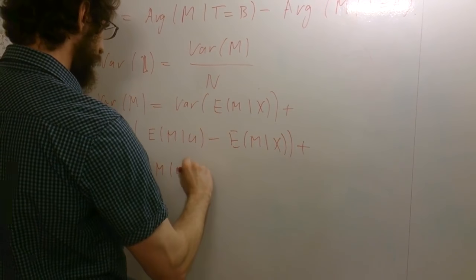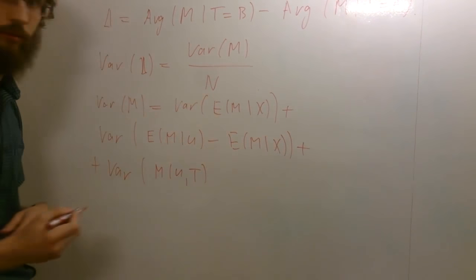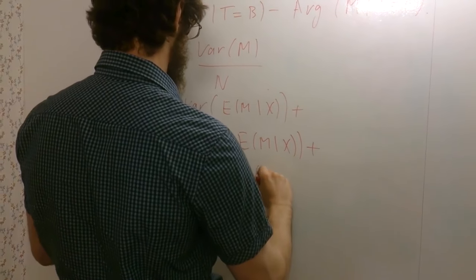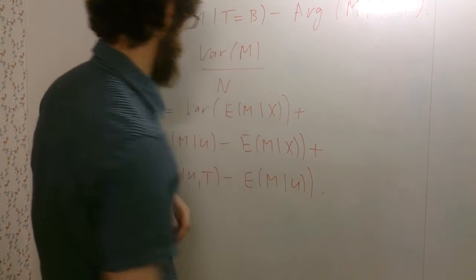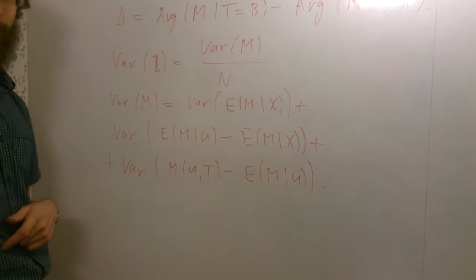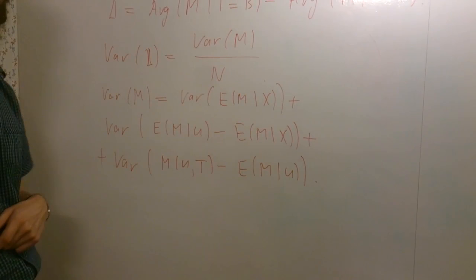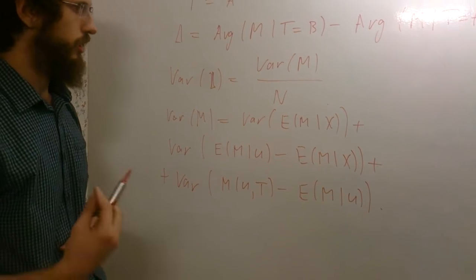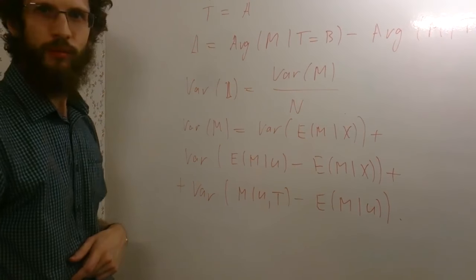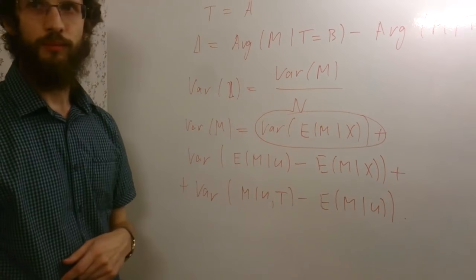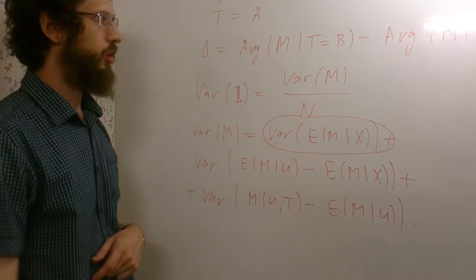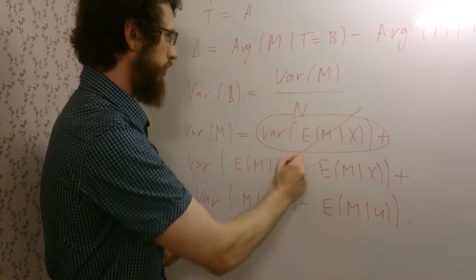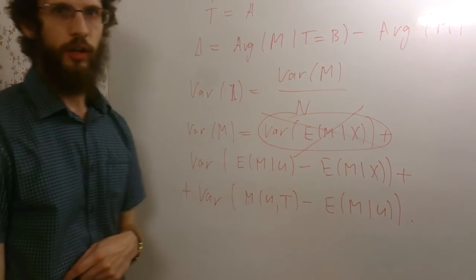Another component involves the expected value of the measure conditioned by the treatment assigned to the user and the expected value of the measure conditioned by this user. So in our paper, we consider the first term. We suggest an approach to reduce it, to alter our measure M in order to save the difference and eliminate the first term of the variance.